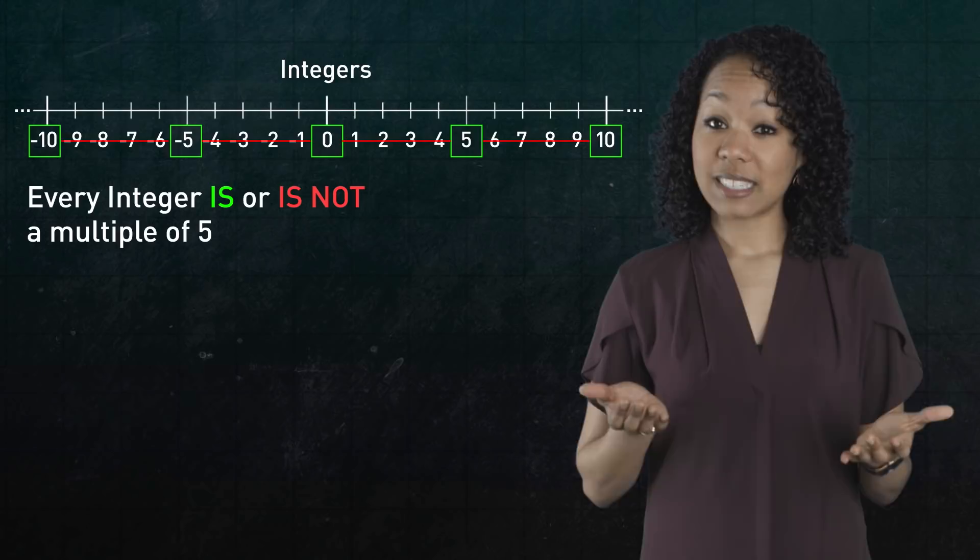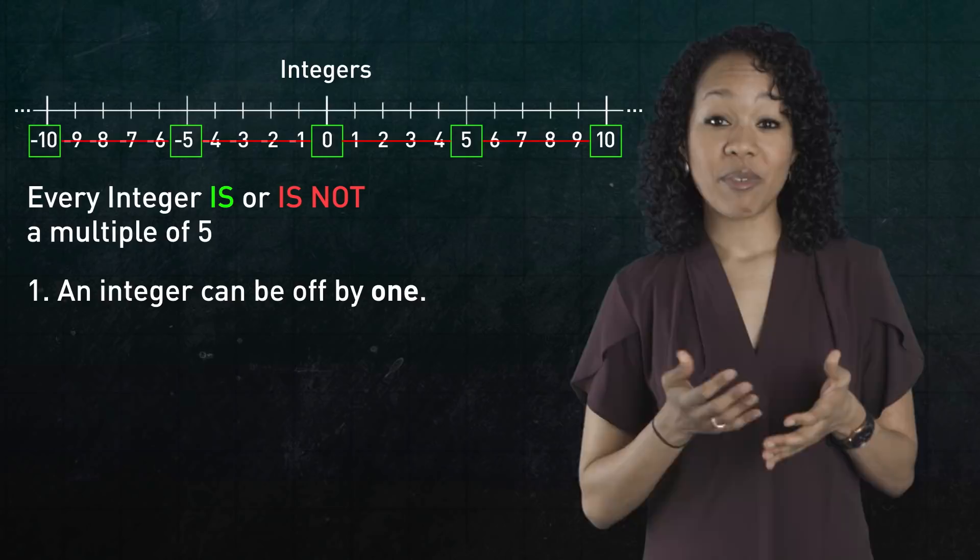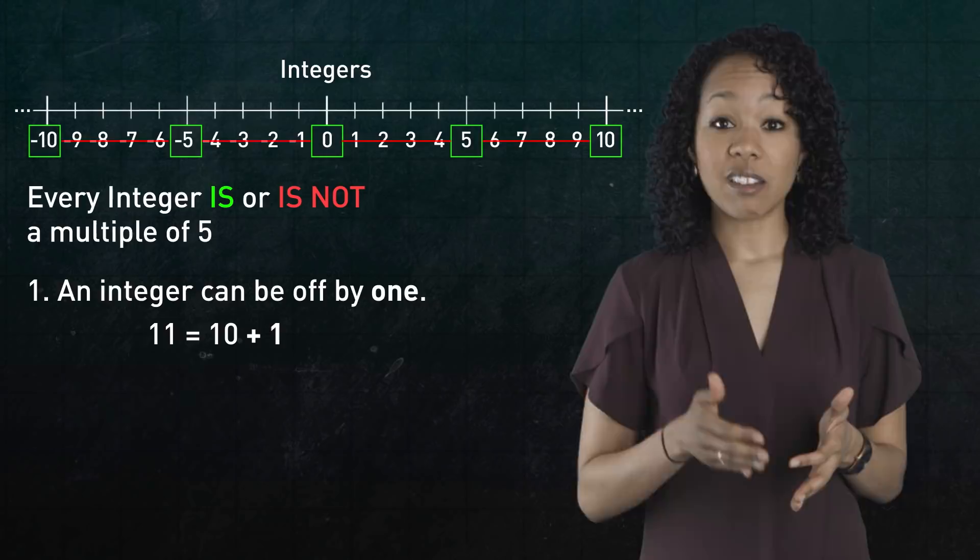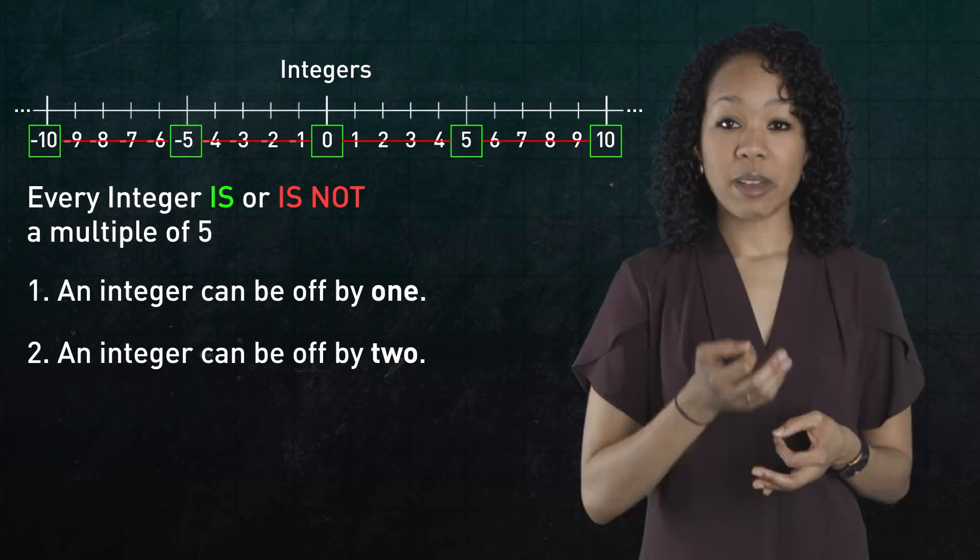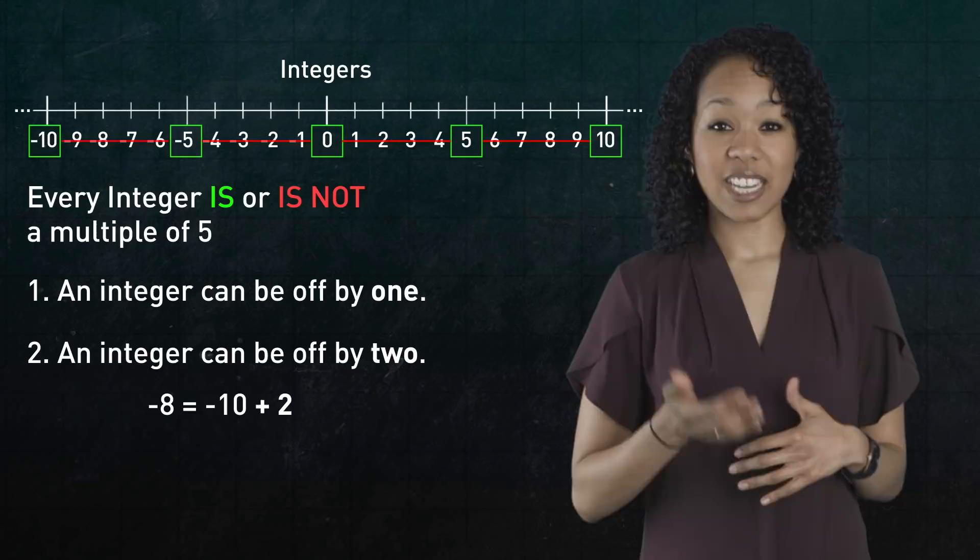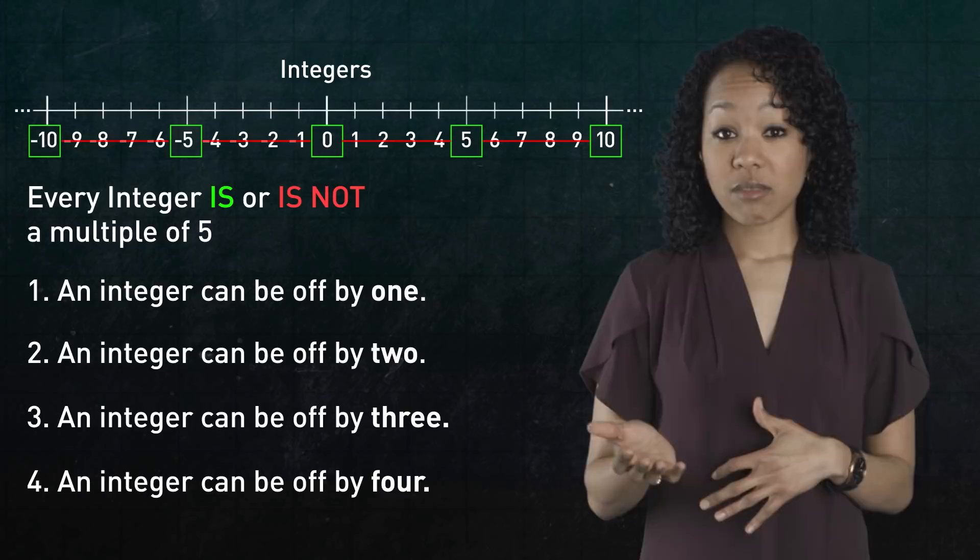An integer can be off by 1. That is, its remainder upon division by 5 is 1. For example, 11 is not a multiple of 5 because 11 is 10 plus 1. Or an integer can be off by 2. That is, its remainder upon division by 5 is 2. For example, negative 8 is not a multiple of 5 because negative 8 is negative 10 plus 2. Similarly, an integer can be off by 3 or an integer can be off by 4.